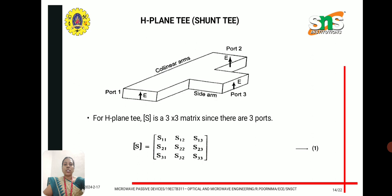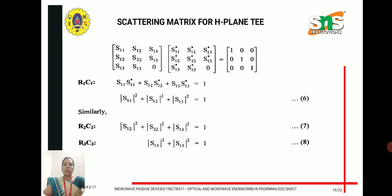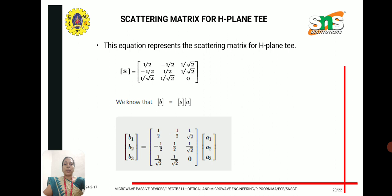When input is given to port 1 and port 2, the output at port 3 is in-phase and additive, so it is called the sum arm—an important property of H-plane T. For the S-parameters, the key difference from E-plane T is that S13 equals S23 with no negative sign, because port 3's input is divided equally in phase and equal magnitude. Applying the zero, unity, and symmetry properties of the S-matrix, we solve and find S13 equals 1 over root 2, giving similar values to the E-plane T.